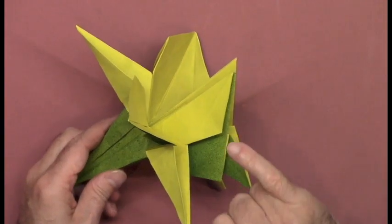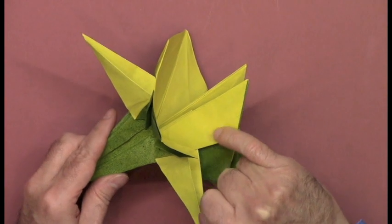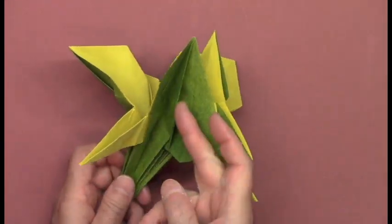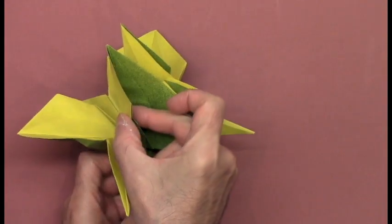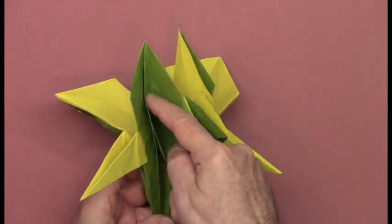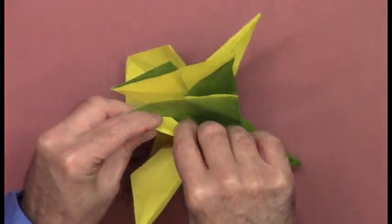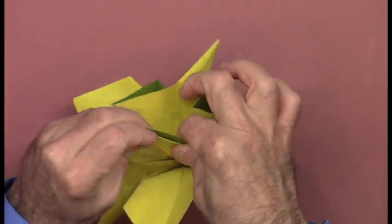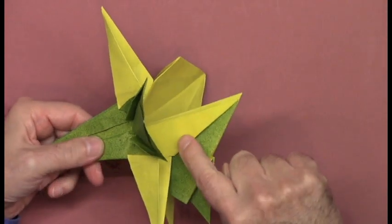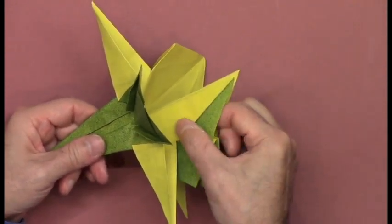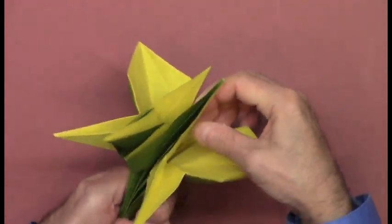This next step is optional. Notice this crease line here and this flap. You can lock this layer behind the folded edge you see here. And in the diagrams, this is what we're doing. Now this builds up thicknesses and if your paper is thick to begin with, you can omit that step. But I'm going to include it now. We'll do the same thing on the other side.